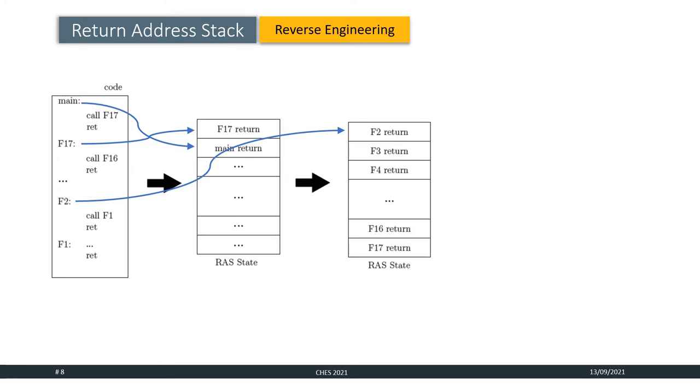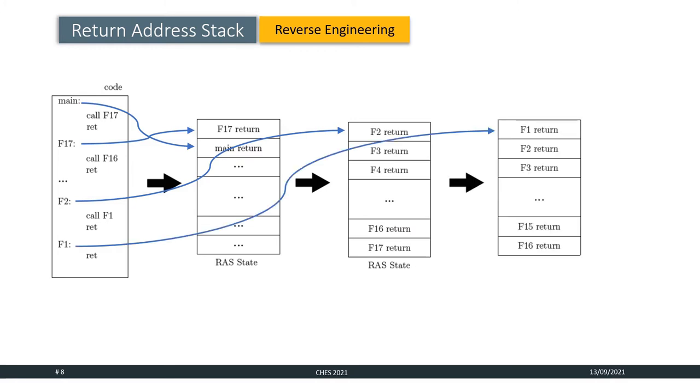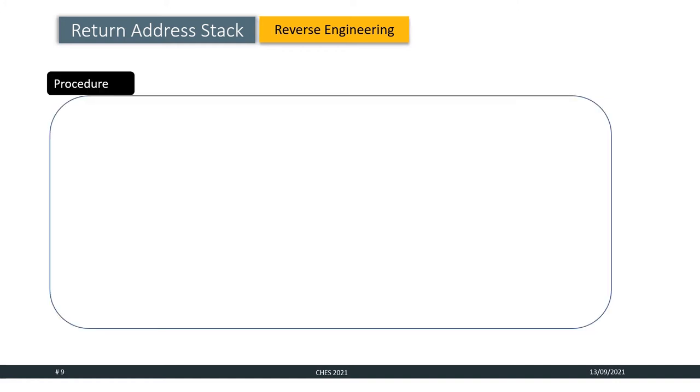When the function f1 is called, its return address will also be pushed into the stack, but as the stack was full at this point, it will lead to an overflow condition and thus the return address for function f17 will be pushed out of the stack. One must note that RAS helps to keep the return address closer to the processor and thus reduces the access latency. For any return address that is not present in the RAS, the processor will take more time to complete the execution. So, we will use this increase in execution time to reverse engineer the stack size.